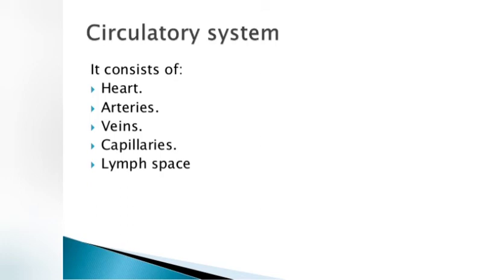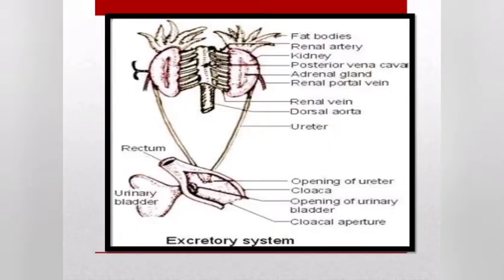The circulatory system contains heart, arteries, veins, and capillaries. Arteries are blood vessels that carry blood from the heart to other organs. Veins carry blood back from other organs to the heart, and capillaries connect to other parts and organs.